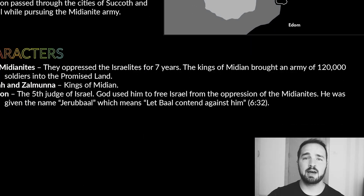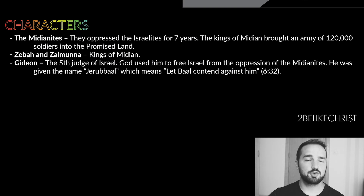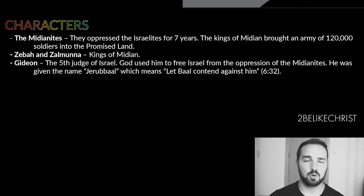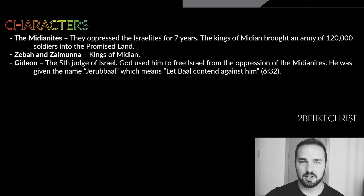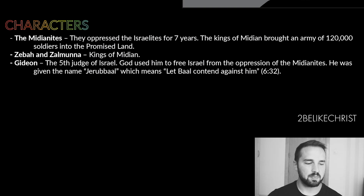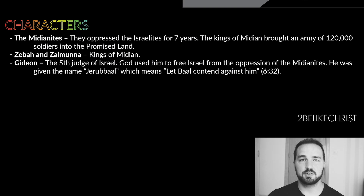Our key characters: we have the Midianites. They had oppressed the Israelites for seven years, and their kings brought their army of 120,000 people across the Jordan River to fight with Israel — but obviously that didn't turn out too well because they're currently retreating. Ziba and Zalmunna are going to be key to this chapter; they were two kings of Midian. And then there's Gideon, the fifth judge of Israel, who led the Israelite army against the Midianites and won this victory.